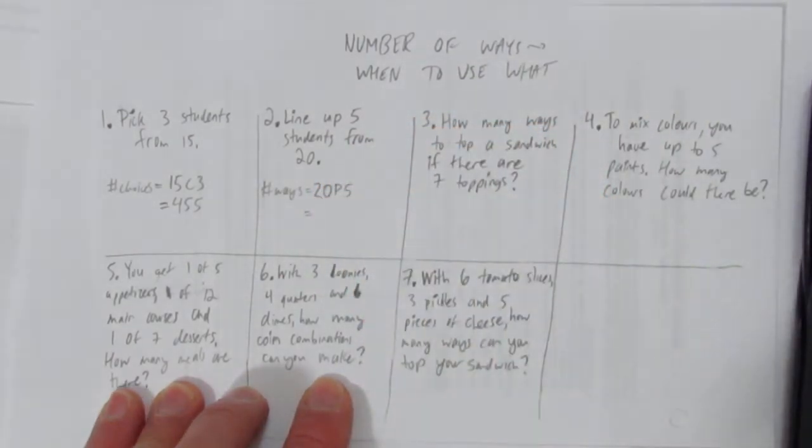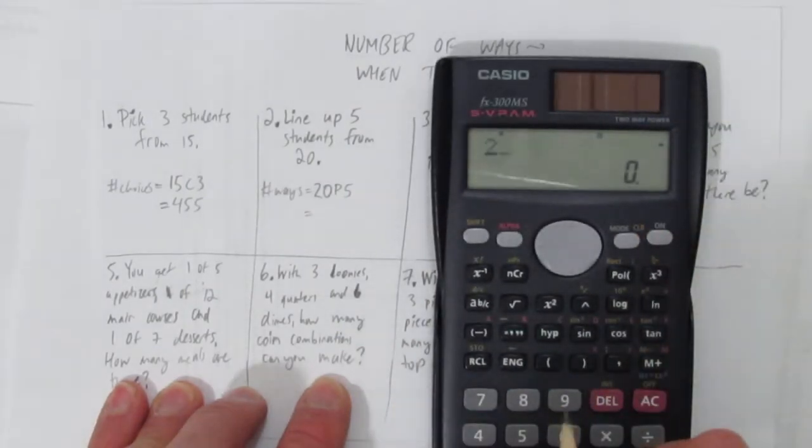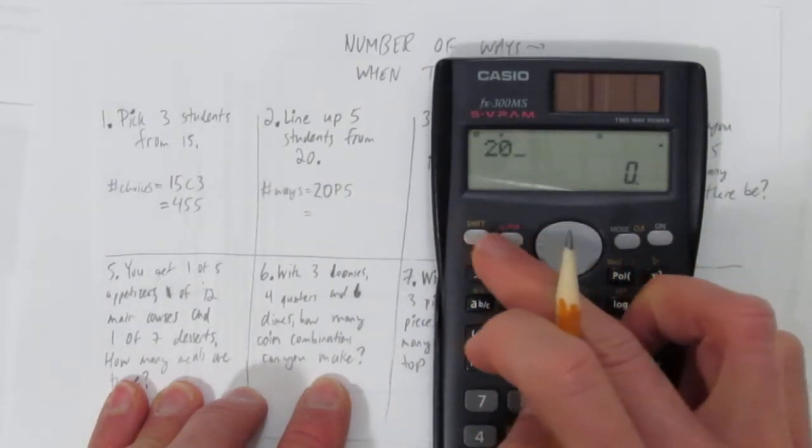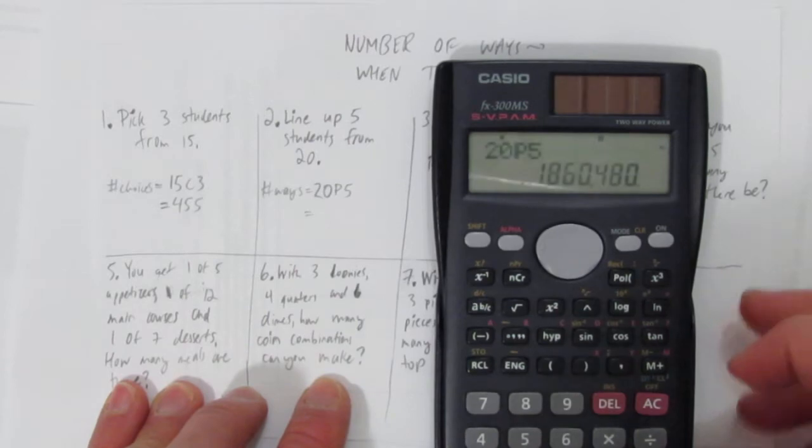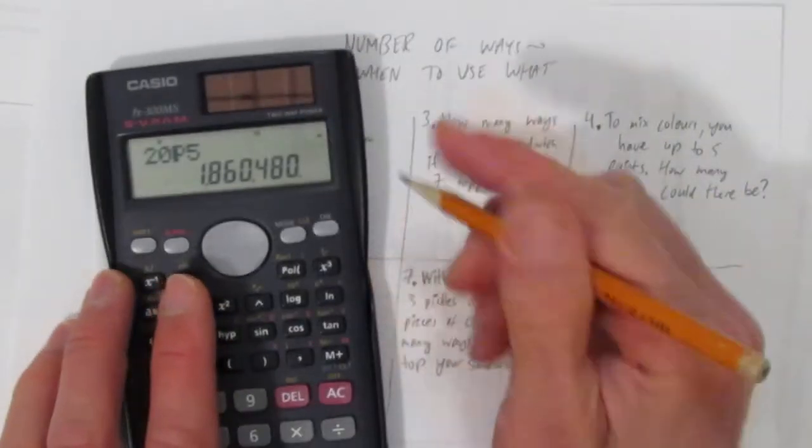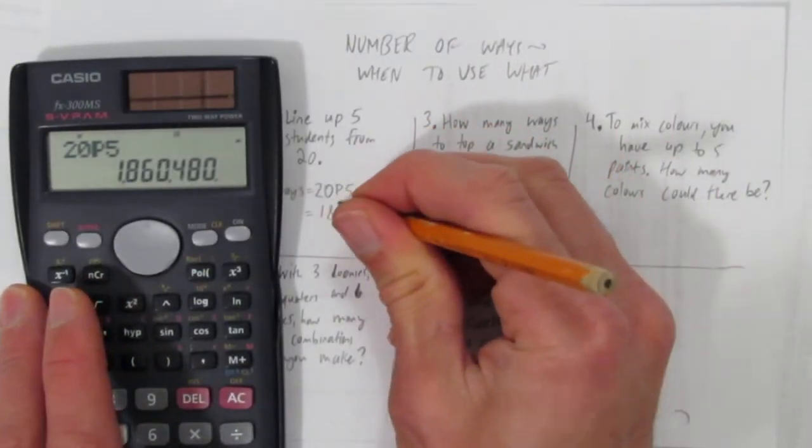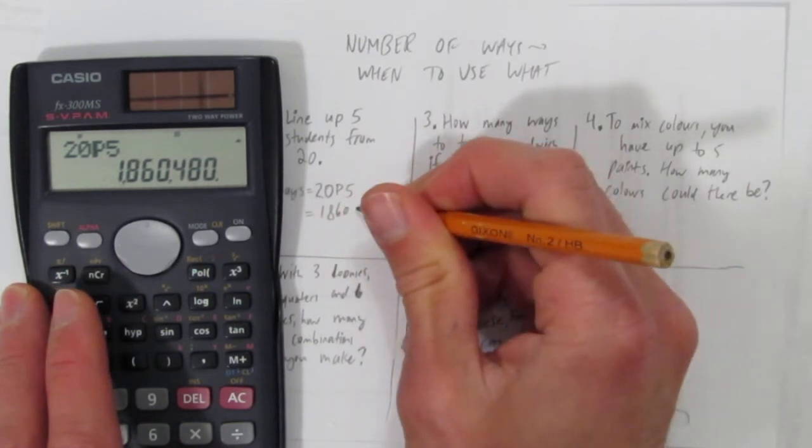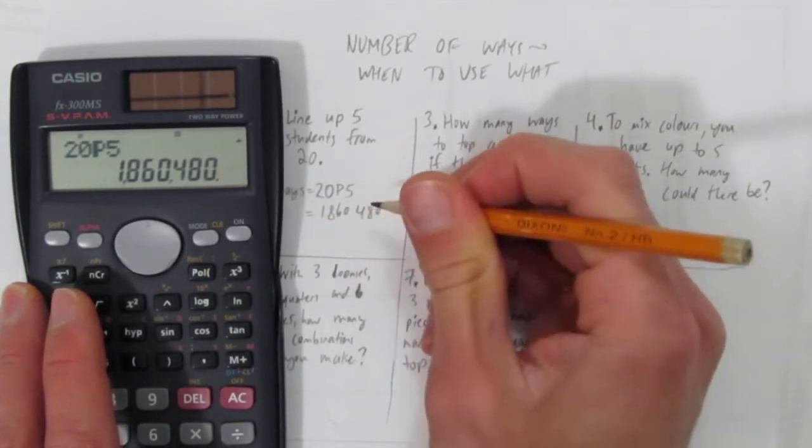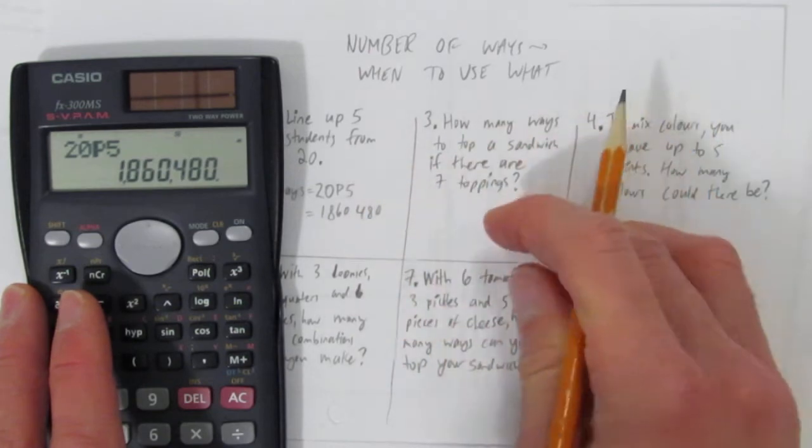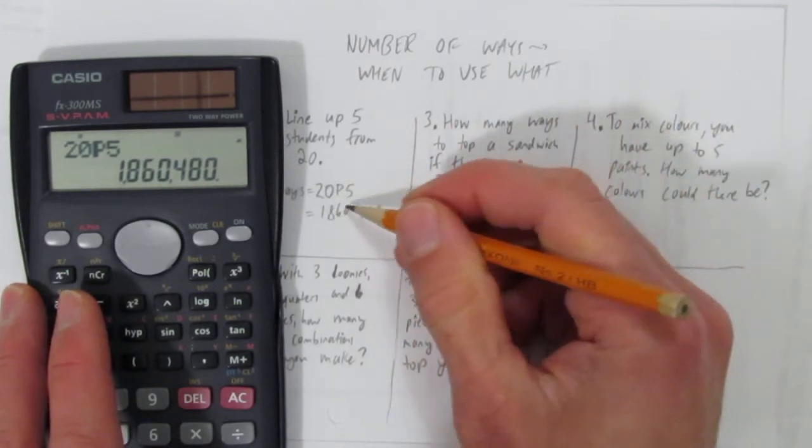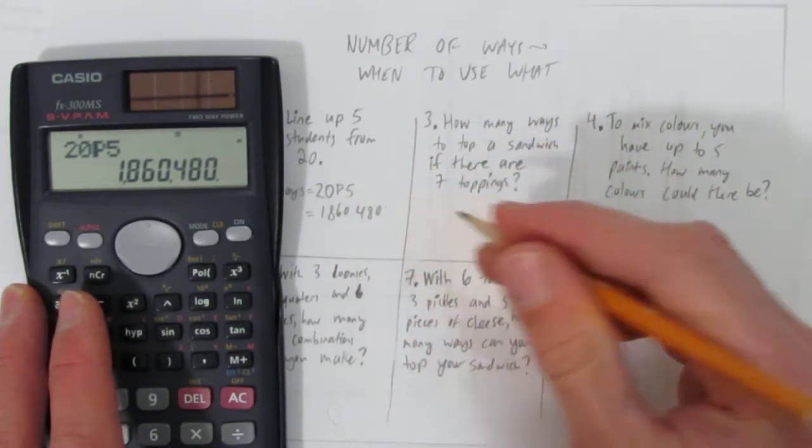We're going to calculate 20P5, which is 1,860,480. A lot more possibilities because of the arrangements. We had to worry about order, so we used permutations and the number goes up.